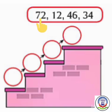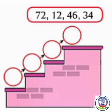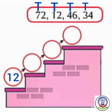Next is 72, 12, 46 and 34. We have to arrange them in ascending order — that is, from small to big. First we will find the smallest number. We will first see the 10s place. The numbers are 7, 1, 4, 3. Which number is smallest? Here, 1 is smallest. So we will write 12 first in the circle.